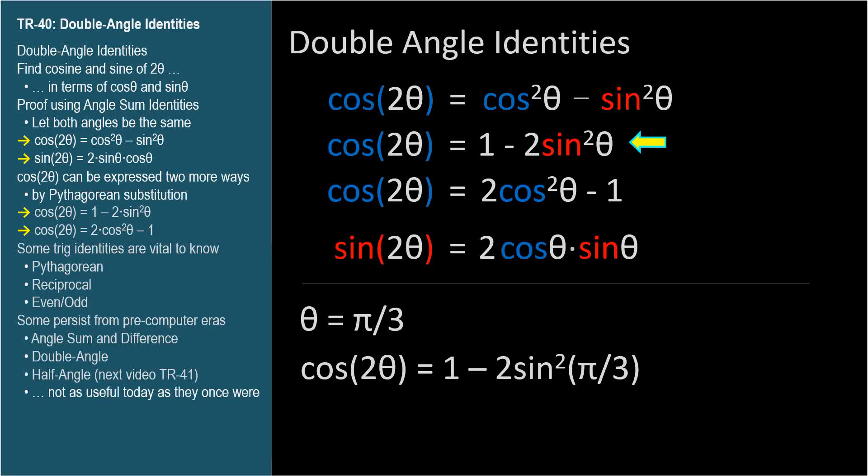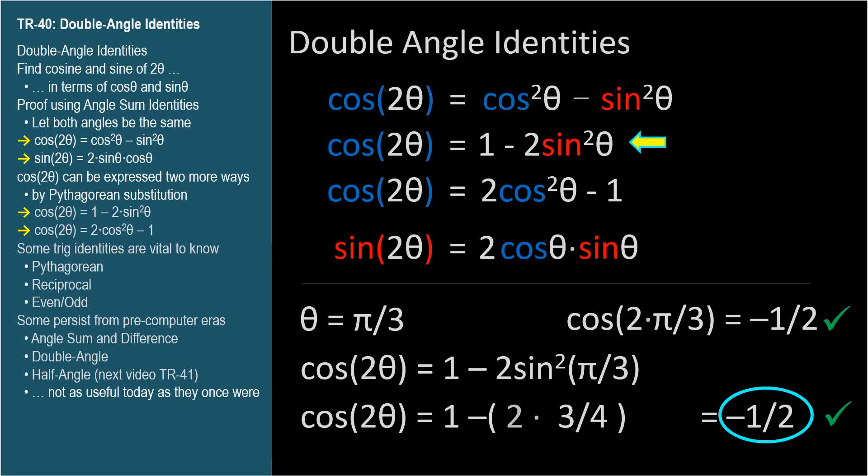1 minus 2 sine squared θ. The sine of π over 3 is square root of 3 over 2. Squaring that is 3 fourths. 2 times 3 fourths is 3 halves. 1 minus 3 halves is negative 1 half.